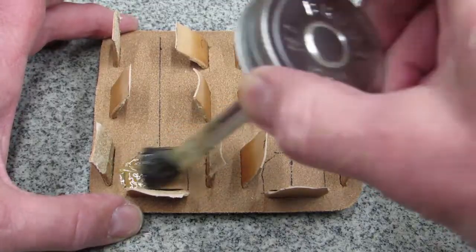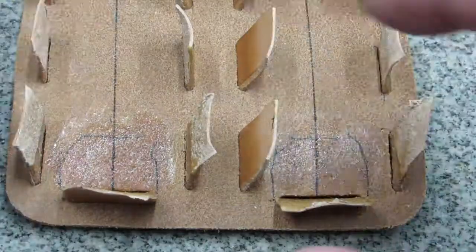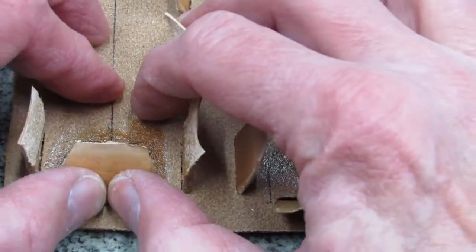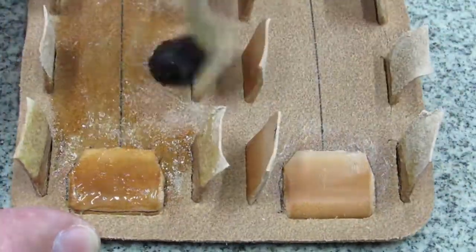Apply contact cement to the bottom tabs and allow to cure according to instructions on the can. Press bottom tabs firmly in place then apply contact cement to affix the rest of the tabs.